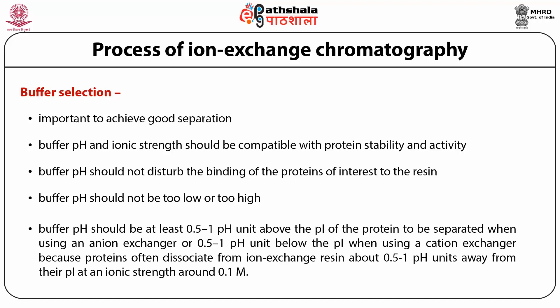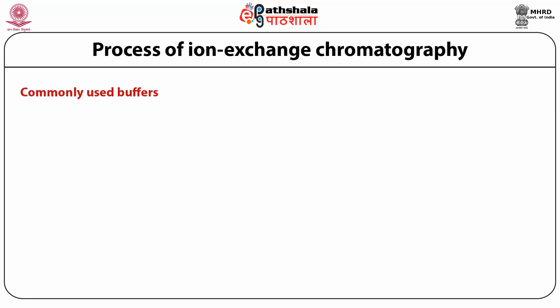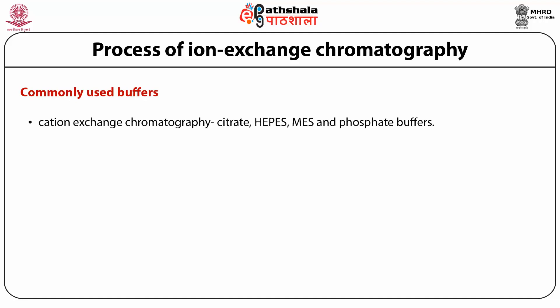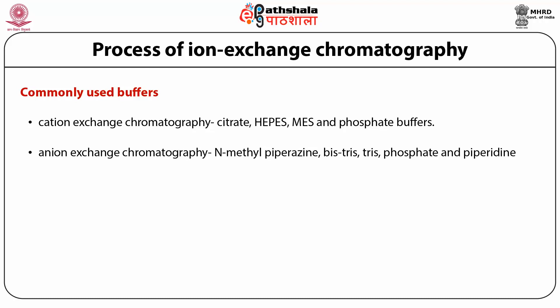At an ionic strength of around 0.1 M, proteins often start to detach from the ion exchange resin about 0.5 to 1 pH unit away from their pI. Therefore, the buffer pH should be at least 0.5 to 1 pH unit below the pI when using a cation exchanger, or 0.5 to 1 pH unit above the pI when using an anion exchanger. Commonly used buffers in cation exchange include citrate, HEPES, MES, and phosphate. For anion exchange, N-methylene piperazine, BisTris, Tris, phosphate, and piperidine buffers are typically used.